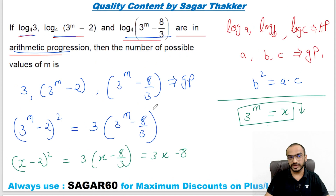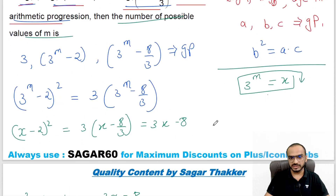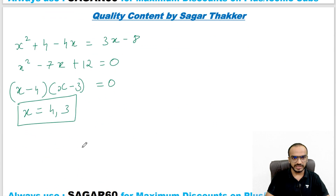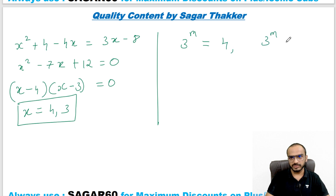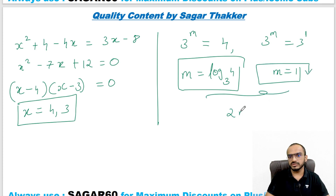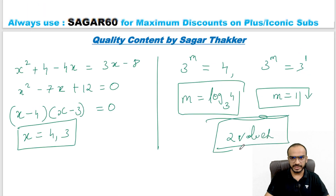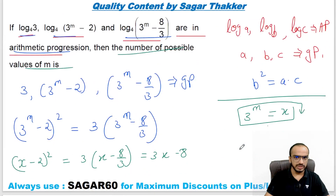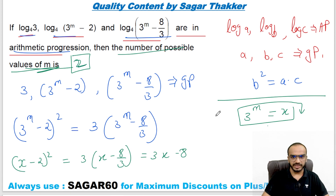So x equals either 4 or 3. But we need to find the values of m, not x. Since x = 3^m: if 3^m = 4, then m = log_3(4); if 3^m = 3, then m = 1. So m can take two values, and the answer is 2.